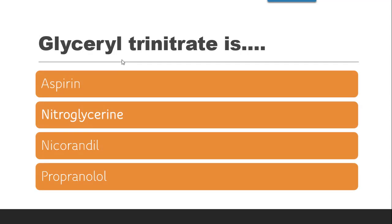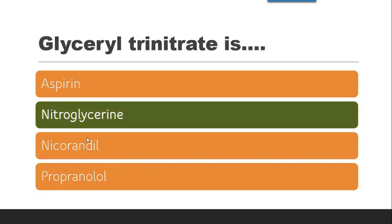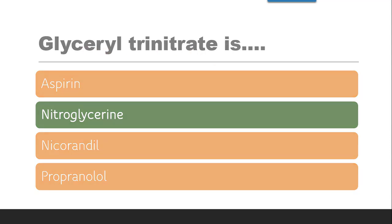The next question is: glyceryl trinitrate is which drug — aspirin, nitroglycerin, nicorandil, or propranolol? The correct answer is nitroglycerin, which is also known as glyceryl trinitrate.